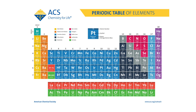The first group elements are called alkali metals because their nature is alkaline. The second group elements are called alkaline earth metals because their nature is alkaline and their abundance is in the earth's crust — that's why they are called alkaline earth metals.